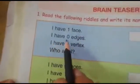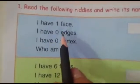I have one face, I have zero edges, I have zero vertex. Who am I? Ab batao mein kaun hoon? Jiska one face hai, zero edges, zero vertex. Who am I? Tell me now. Socho socho, achche se socho, kaun hoon mein?